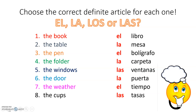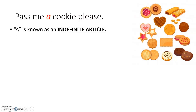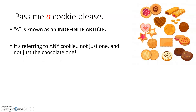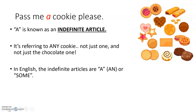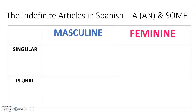Well done if you got full ocho puntos in that activity! So let's take a look at the other lady from our starter screen. She didn't say 'pass me the chocolate chip cookie' — she said 'pass me a cookie.' 'A' is known as an indefinite article. It's referring really just to any cookie on the plate — not that specific chocolate one. In English the indefinite articles are 'a' or 'an' — if it's followed by a vowel or silent consonant — or the word 'some' referring to something plural. Any guesses how many there might be in Spanish? That's right, there are going to be four again.